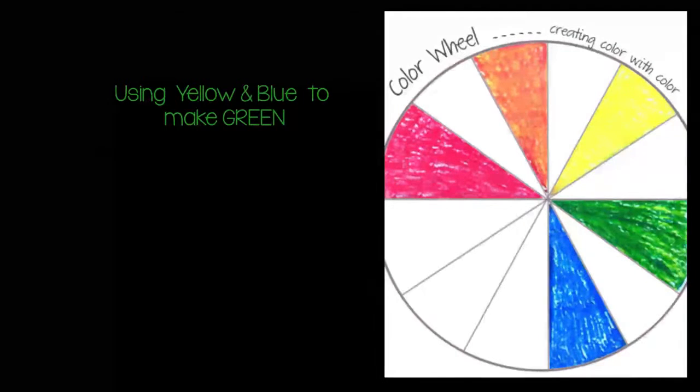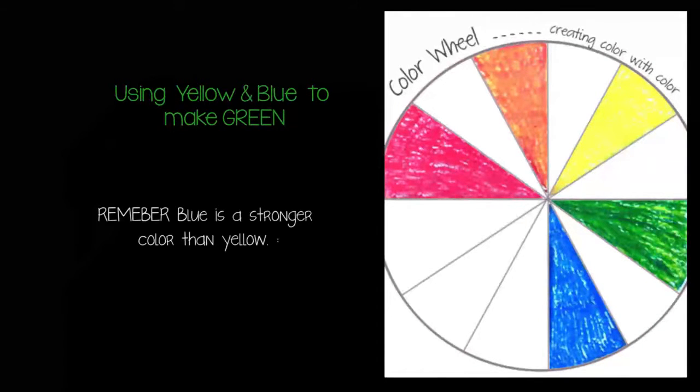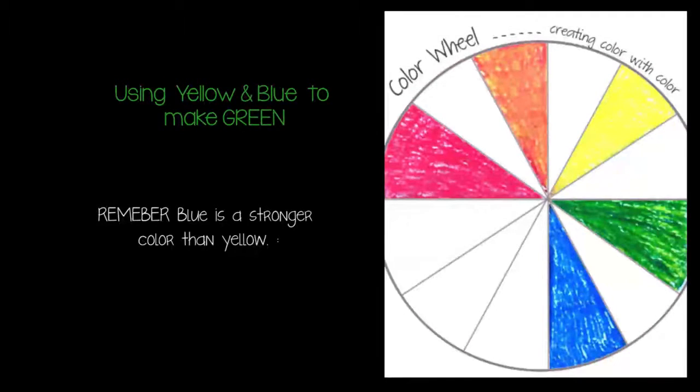For our second secondary color, we'll create green. Green is a combination of yellow and blue. Again, blue is stronger than yellow, so you will need more yellow than you will blue. Start with a light coat of blue as you did with the red. Then color over with the yellow to blend and create your green.